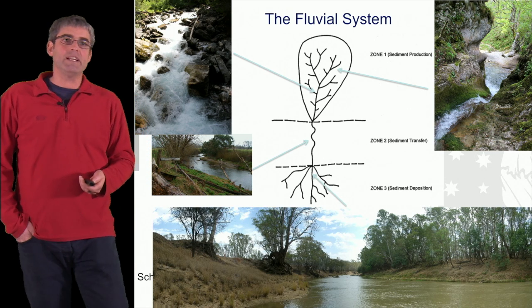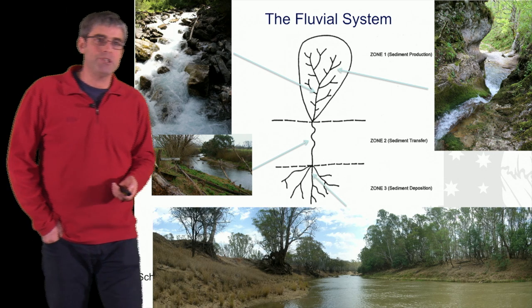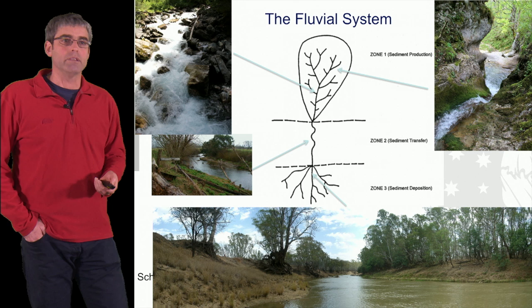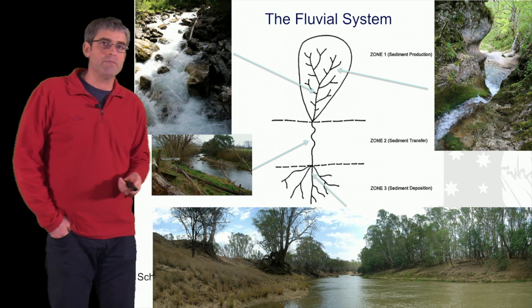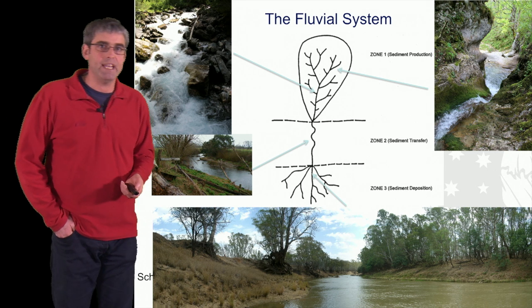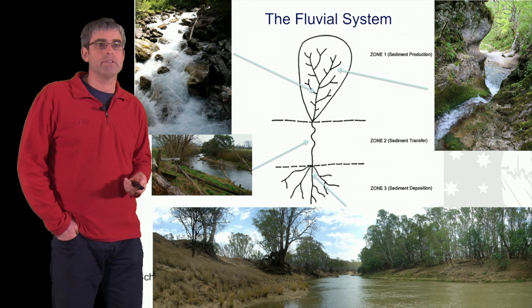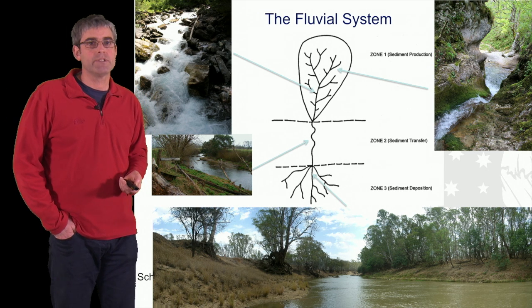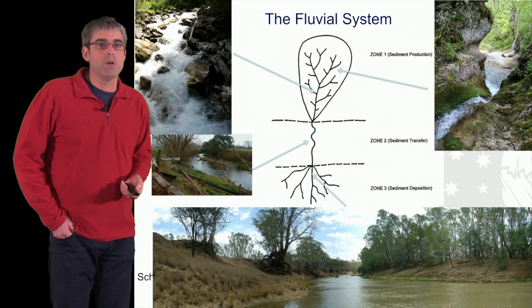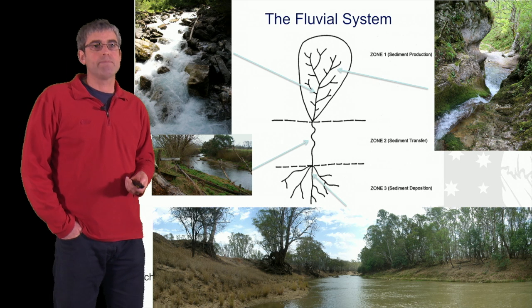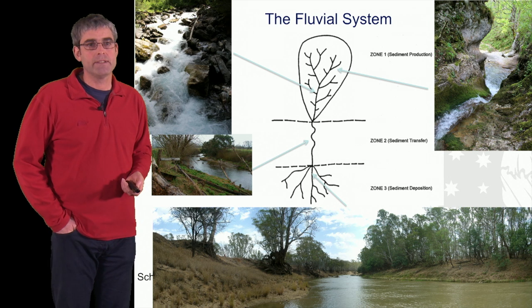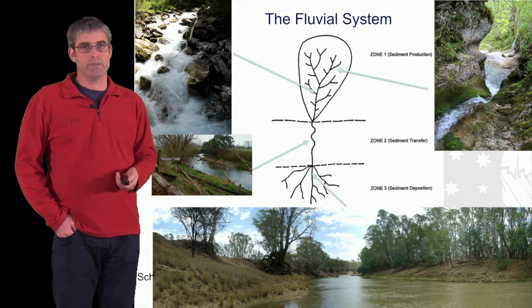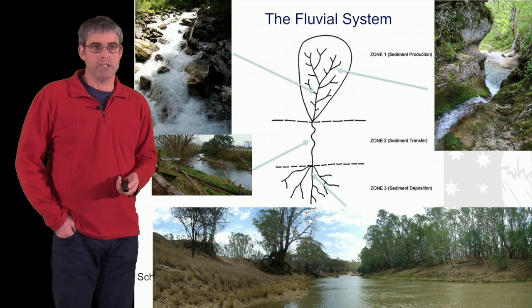Down in the lowland section — the deposition zone — we have typical low gradient rivers with sand and silty stream sediment loads, wide floodplains, and low velocities for the flow within the channel.